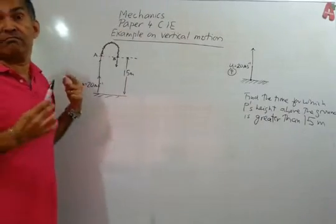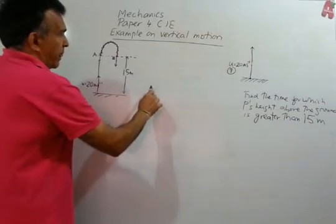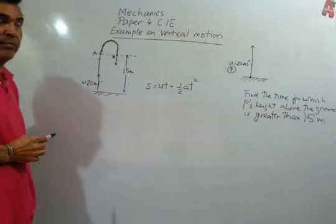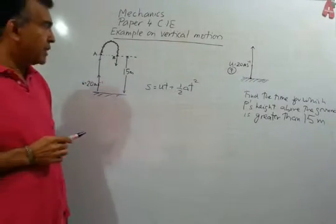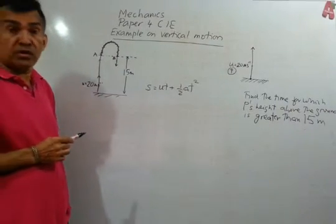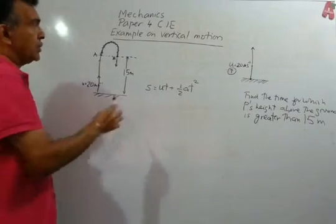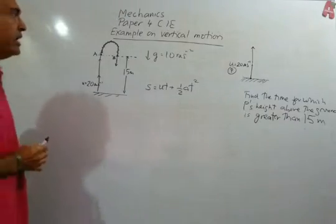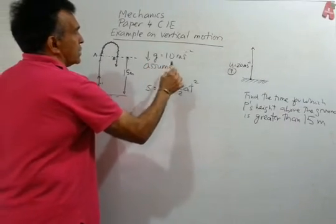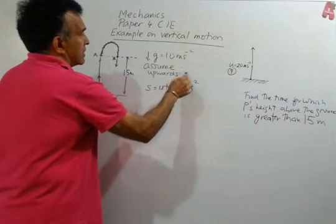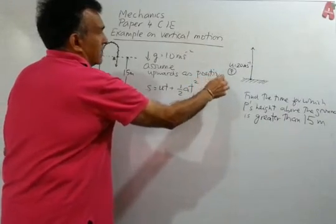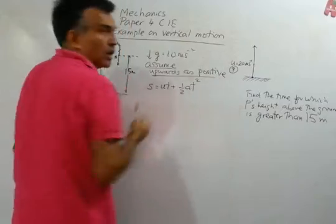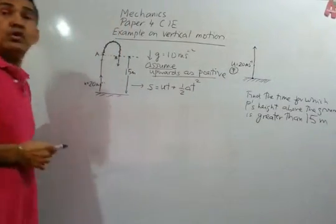We will use the constant acceleration formula: s = ut + ½at². We can use this because the only resistance to motion is due to gravity. Acting downwards we have g = 10 meters per second squared, and we assume upwards as positive, so a = −10.